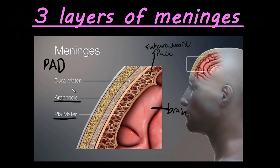Next we have the dura mater — that's the D in PAD. So pia mater, arachnoid, and dura mater are the three layers of the meninges going from the inside to the outside. The dura mater attaches directly to the skull and helps keep the brain in place. And that's just a little bit about the three layers of the meninges.